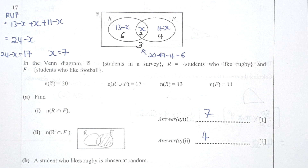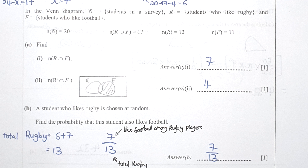Question 17: I set the intersection as x. R only is 13 minus x, and F only is 11 minus x. Everything outside R union F is 20 minus 17, which is 3. The number in R intersect F is 7, and everything outside R intersect F is 4. For section B, narrowing down to those who like rugby, the probability that a student also loves football is 7 over 13.